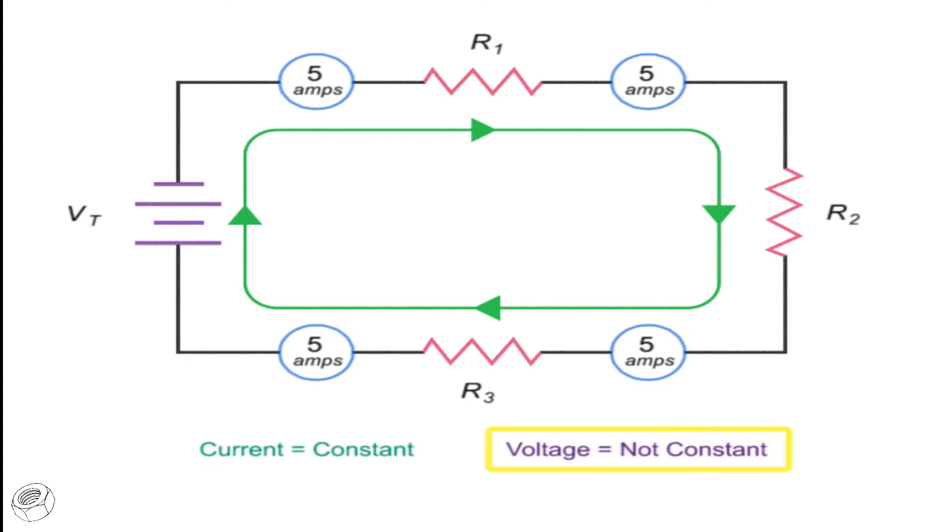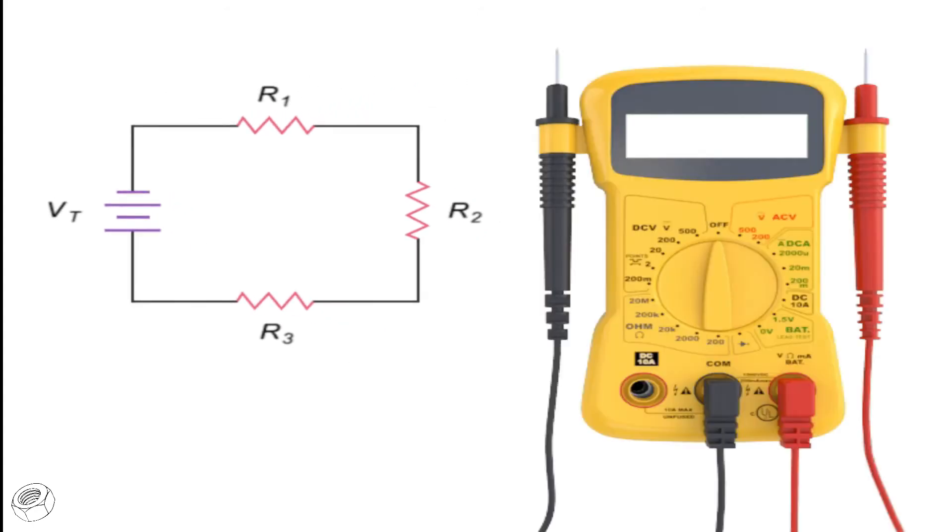Voltage in a series circuit is divided across the load resistors so that the sum of the individual voltages equals the total voltage applied. This relationship is known as Kirchhoff's law. By adding the voltage drop across resistors 1, 2, and 3, you can determine the total voltage applied at the source.